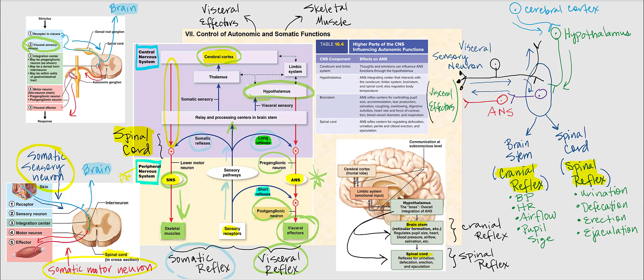Looking at the illustration: the visceral sensory neuron synapses with either an interneuron or directly with a pre-ganglionic neuron. This visceral sensory neuron also sends information to the cerebral cortex so the brain knows what's happening. The hypothalamus can influence the pre-ganglionic neuron, which is part of the ANS. The cerebral cortex can also influence the hypothalamus, which then influences the pre-ganglionic neuron of either the sympathetic or parasympathetic division — the hypothalamus is the so-called boss of the ANS.